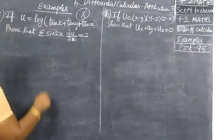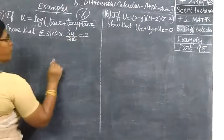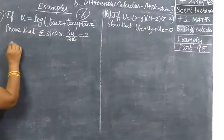If u equal to log of this, prove that sigma sin 2x equal to du/dx equal to 2. Log may have known one by something.